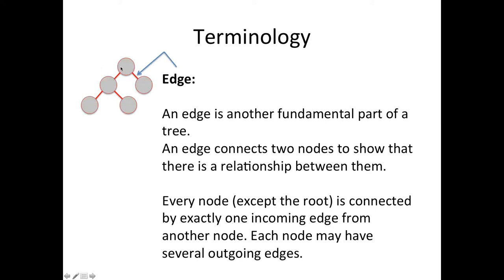The lines that link the nodes are called edges. So an edge is another fundamental part of a tree. An edge connects two nodes to show that there is a relationship between them. In a tree there's a natural direction. You always start at the root which is at the top and so you can think of all the edges as pointing down as they go.